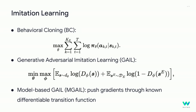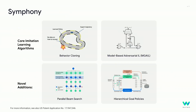On top of these core imitation learning algorithms, Symphony contributes two additional pieces. First, a parallel beam search that refines policies on the fly by pruning branches unfavorably evaluated by the discriminator, ensuring highly realistic behavior. Second, a hierarchical approach that factors agent behavior into goal generation and goal conditioning, allowing agents to have diverse intents and reproduce the full distribution of realistic behavior.